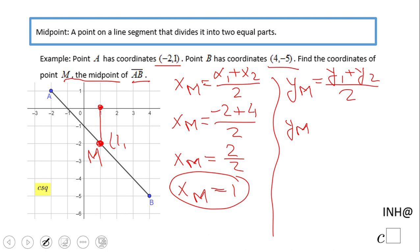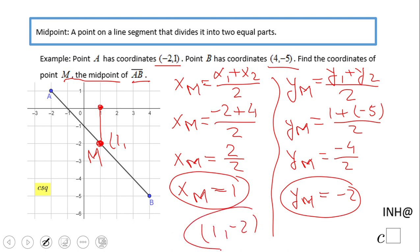In this case, we're going to have 1 plus -5 divided by 2. That will be -4 divided by 2, which equals -2. The midpoint is (1, -2), and you can see that also here in the picture.